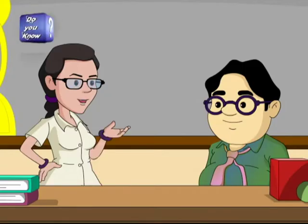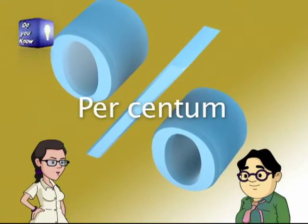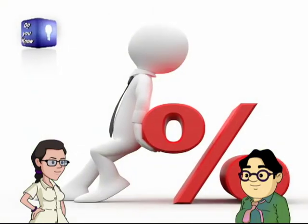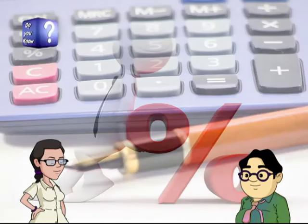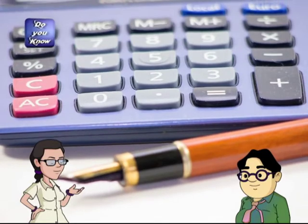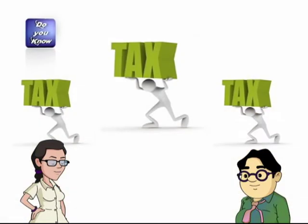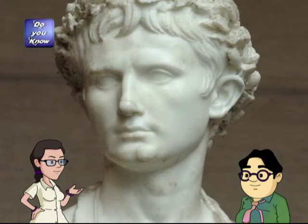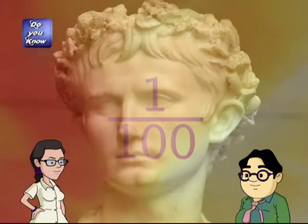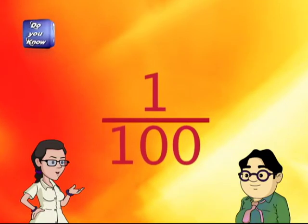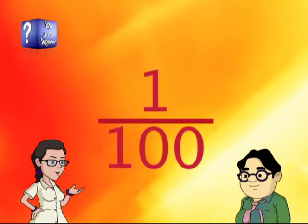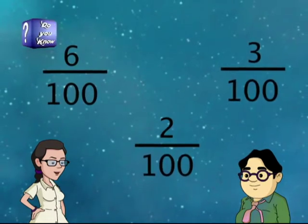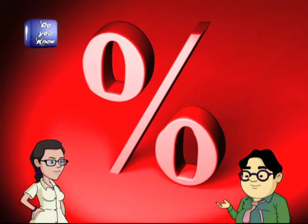Did you know that 'percent' gets its origin from the Latin word 'per centum,' meaning 'per hundred'? It has been used since the end of the 15th century in business problems like computing interest, profit and loss, and taxes. But the idea is much older — the Roman Emperor Augustus levied a tax on all goods sold at auction at the rate of 1/100, though back then fractions easily reduced to hundreds were used rather than the percent symbol.